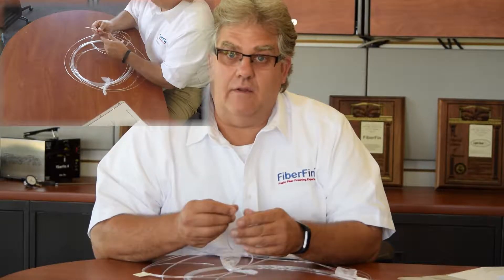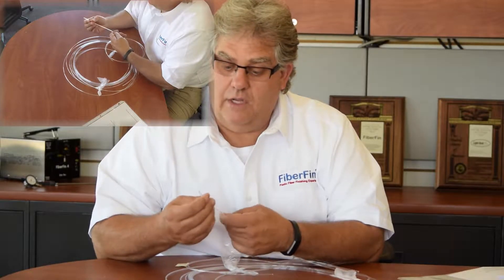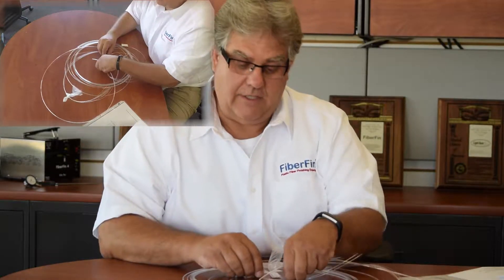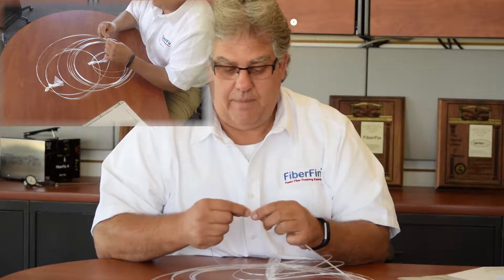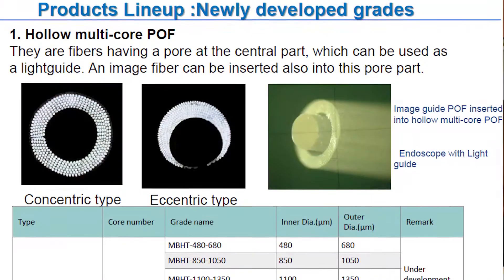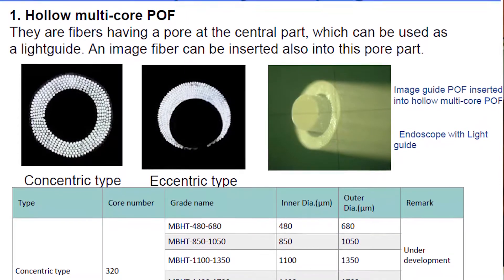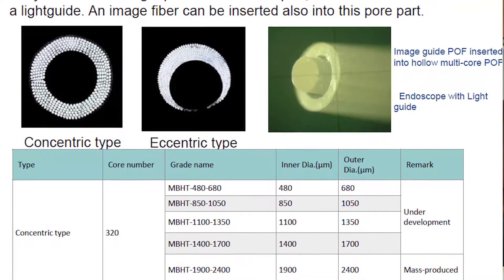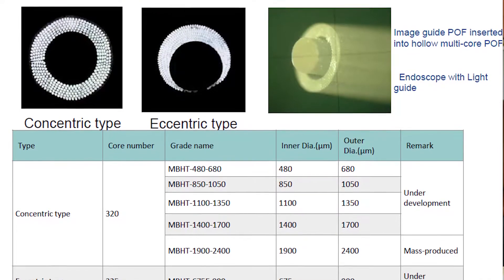This right here would be a multi-core, but this has another very unique thing about plastic fiber optic — this is hollow core. You could run an image fiber inside of this hollow core. In this application, you can actually run your image fiber around your lighting, so for something like an endoscope, this is a great application. This particular group of fibers is in the image grade and it's defined by the number of pixels.